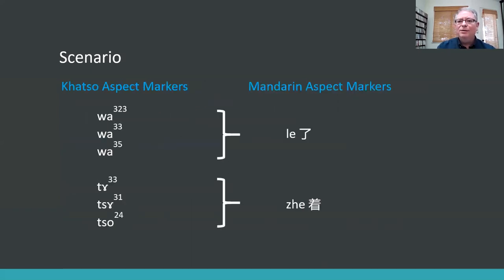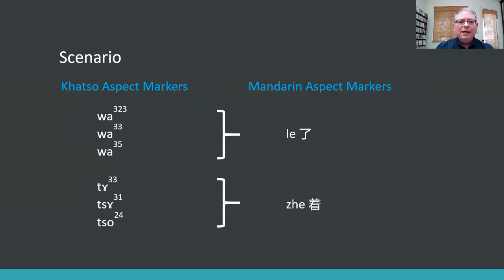Briefly, one situation in which Mandarin was an obstacle for me came about when I was studying the aspect markers of Kadzo. Kadzo is a Tibetan-Burman language, so it is distantly related to Mandarin and does share certain constructions. But one thing that is very different is that Kadzo has a lot more grammatical particles than Mandarin does, and in translation, many particles get mapped onto one single particle in Mandarin.